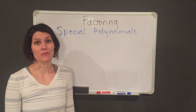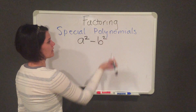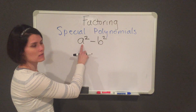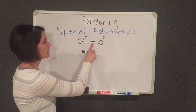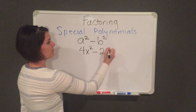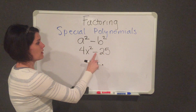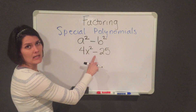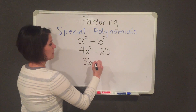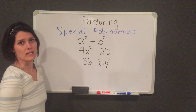So let's talk about a difference of two squares. That would be a squared minus b squared. A difference of two squares has two terms that are perfect squares with a minus sign in between. For example, 4x squared minus 25. These are two square terms with a minus sign in between, so this would be a difference of two squares. Another example would be 36 minus 81y squared.